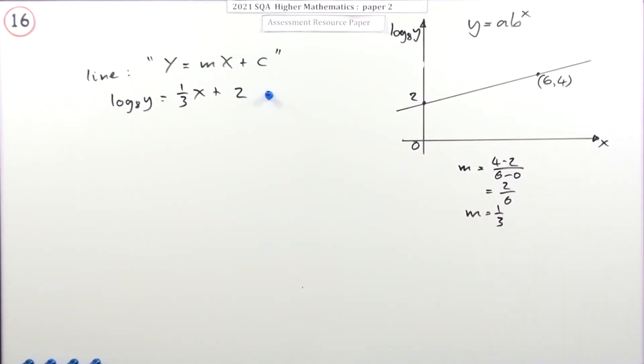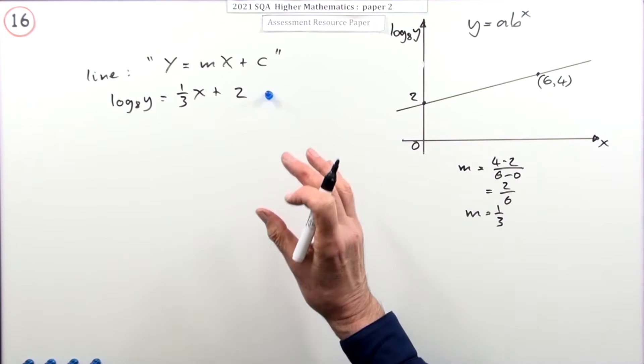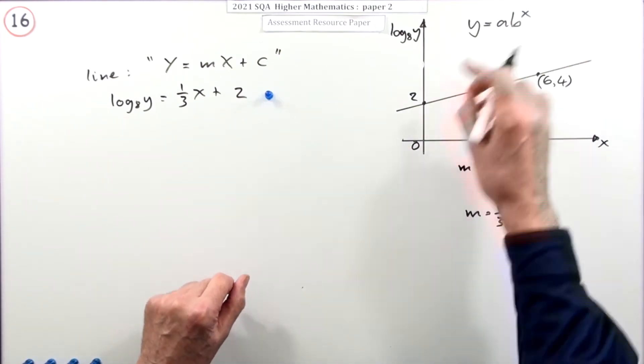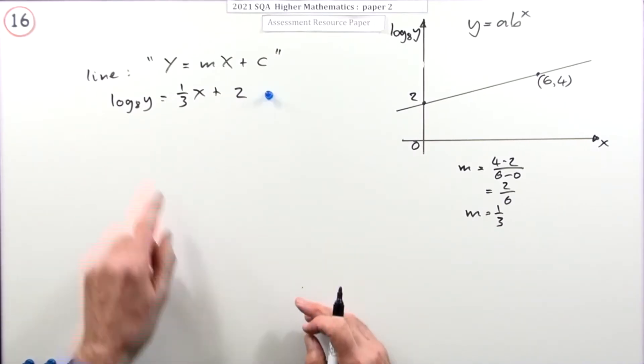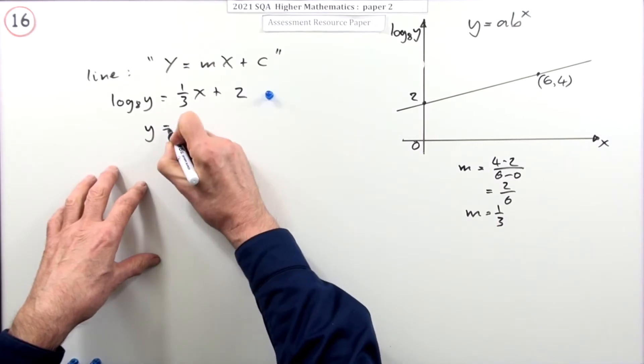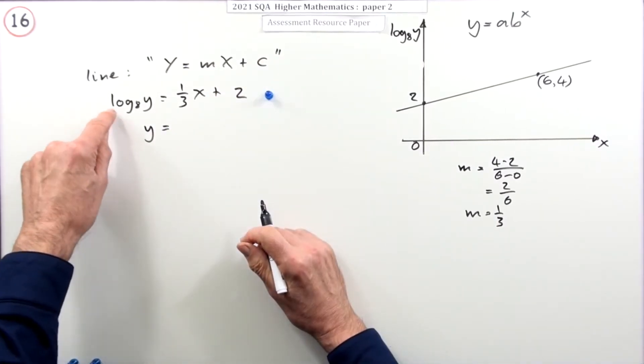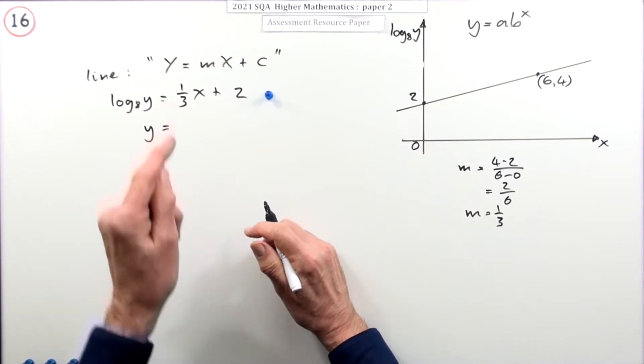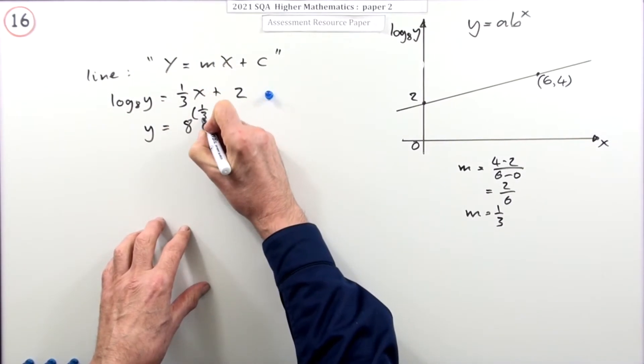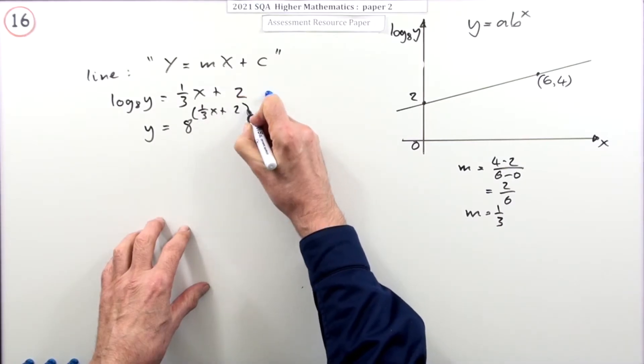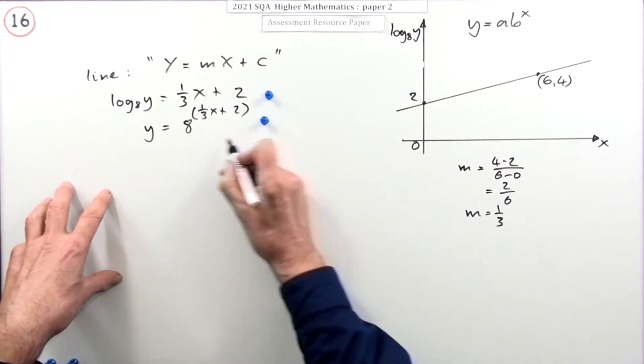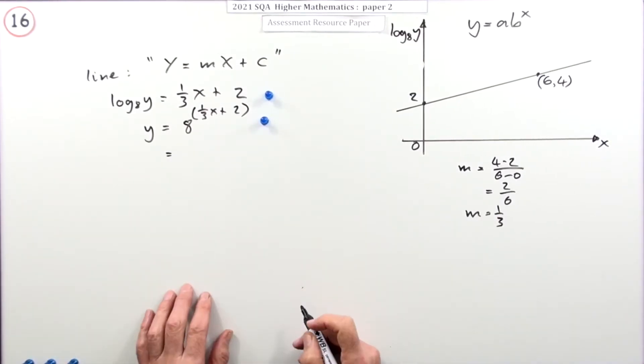Now, what you've got to do is gather this up to look like that. That's where it can split into two different ways. Basically, just meaning, how do you get rid of that log? There's no logs there. There's exponentials there. How do you get rid of that log? The way I would do it is just use the inverse. So, that's one way. The inverse of log base eight is eight to the power. So, eight to the power of whatever it said on this side. A third of X plus two. So, that would be a mark.